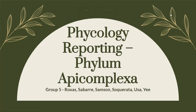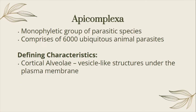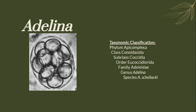Good day. We're Group 5 and we are to present the Parade of Toxa in the phylum Apicomplexa. Before we start, let's have a brief discussion about this phylum. It is a known monophyletic group of parasitic species which is comprised of about 6,000 animal parasites. As a defining characteristic, it has its cortical alveolae, which is a vessel-like structure under the plasma membrane.